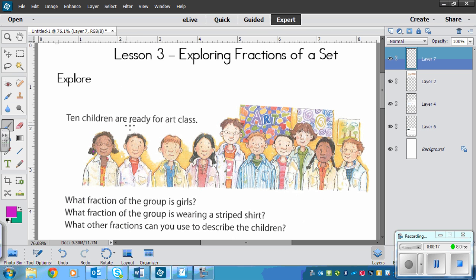It says 10 children are ready for art class. What you need to do is find what fraction of the group is girls, what fraction of the group is wearing a striped shirt, and then you choose a feature or two for what other fractions you can use to describe the children, or more if you can.